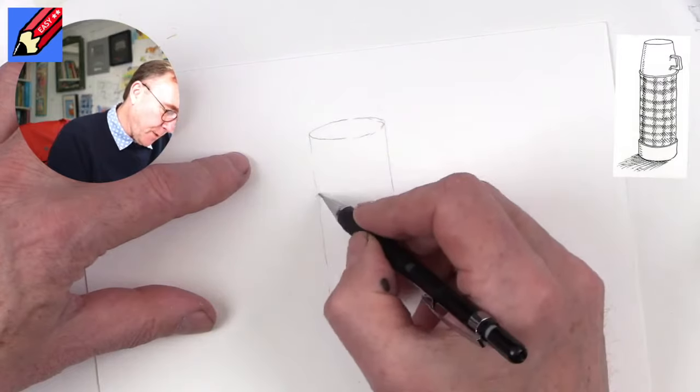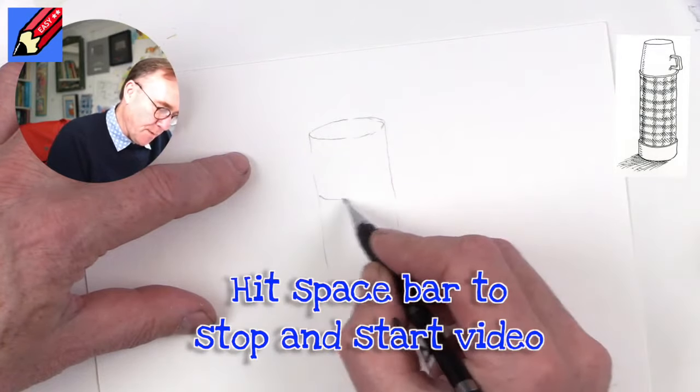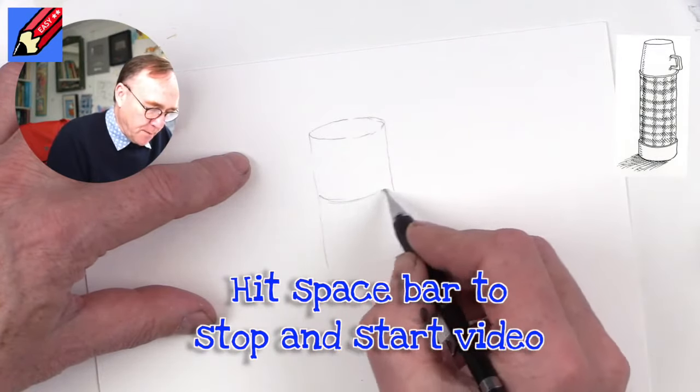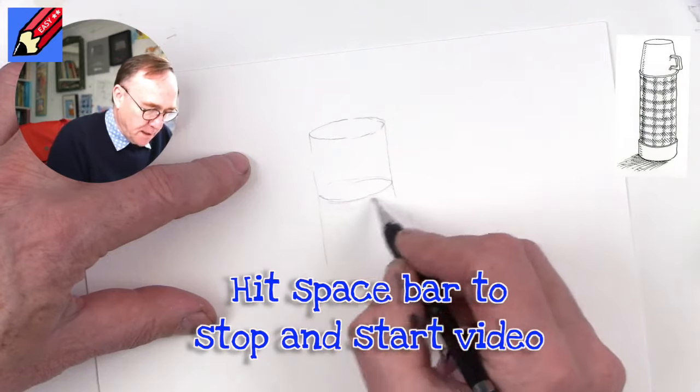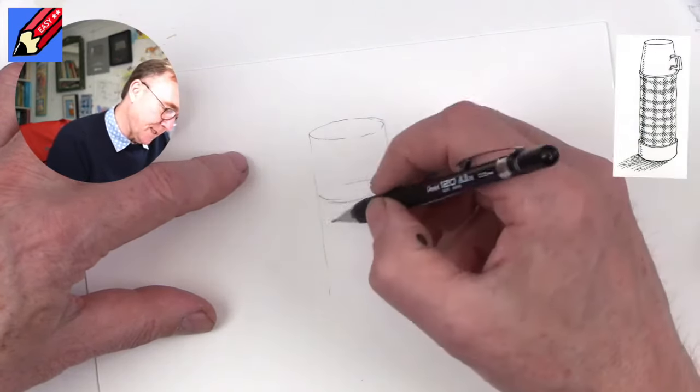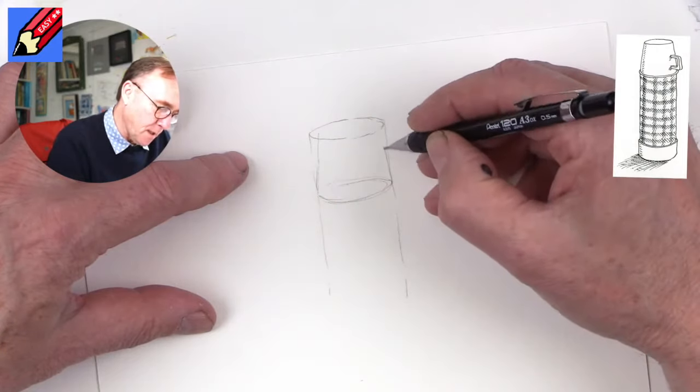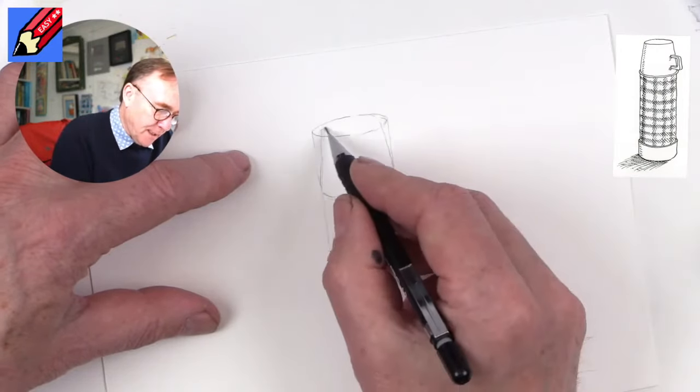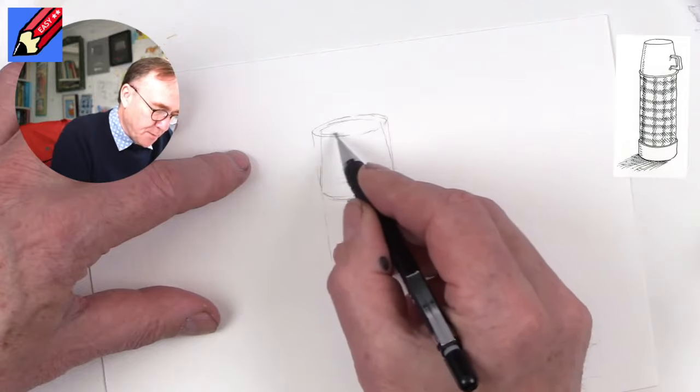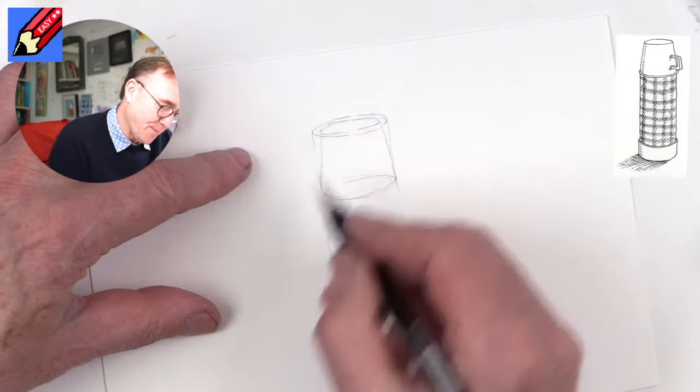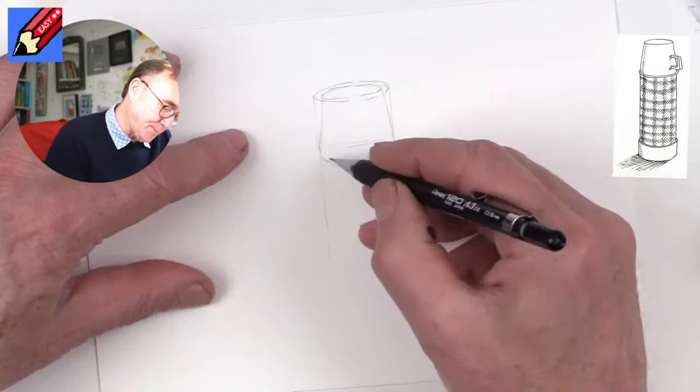But what we really want is to have a cup at the top. So we can imagine there would be another ellipse inside there, but we want to bring this in a little bit like that. Then we'll have a smaller ellipse within that bigger one at the top.